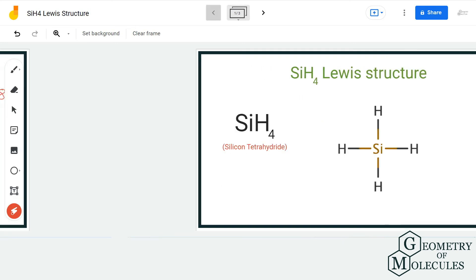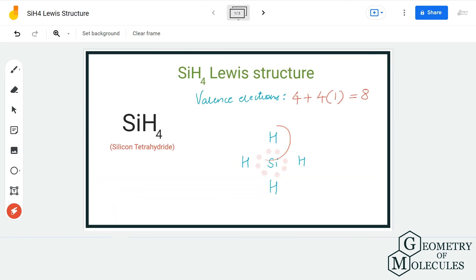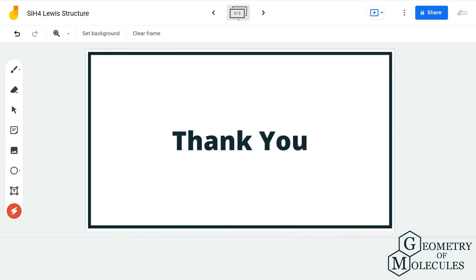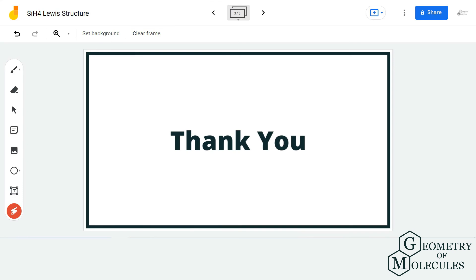Silicon atom has eight valence electrons in its outermost shell, hence completing its octet. So this is the Lewis structure for SiH4.